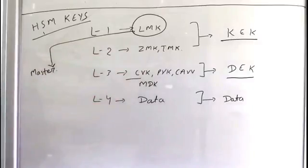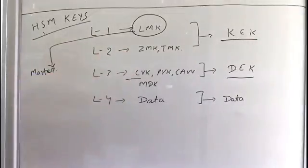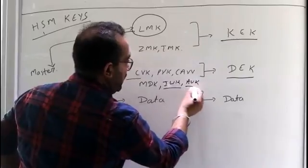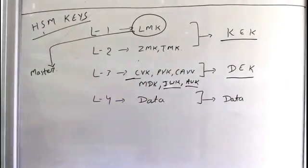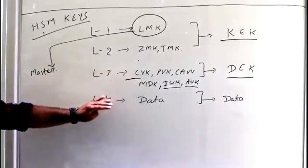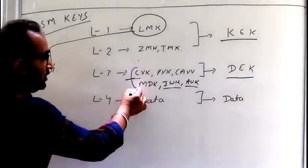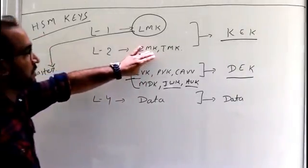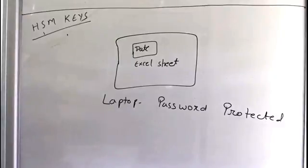Another KEK is ZMK or DMK — Zone Master Key. These keys are also used to further encrypt some other keys. For example, IWK and AWK are normally encrypted under ZMK or DMK. The other type is the Data Encryption Key (DEK). Whenever data is either generated or encrypted, these DEK keys are used. They can be stored either under the ZMK or under the LMK.